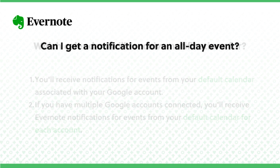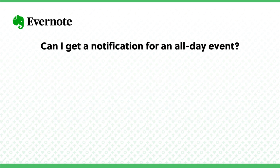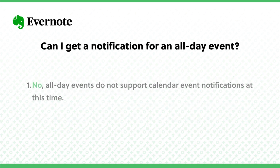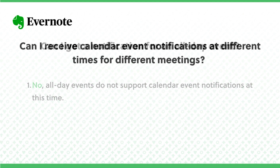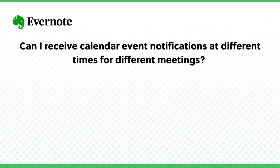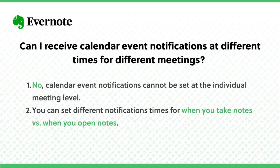Can I get a notification for an all-day event? At this time, all-day events do not support calendar event notifications. Can I receive calendar event notifications at different times for different meetings? Calendar event notifications cannot be set at the individual meeting level. You can, however, set different times for when you take notes versus when you open notes — before, at, or after meetings.